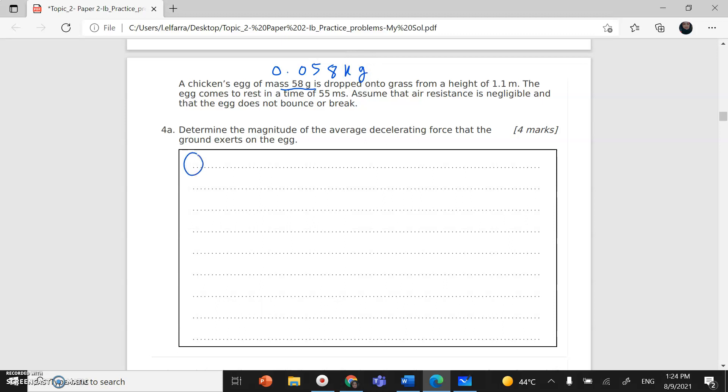The egg is dropped, so this is a free fall from a height of 1.1 meters. The egg comes to rest in time delta T, which is milliseconds. Millisecond means times 10 to the power negative 3 seconds. Assume that air resistance is negligible and the egg does not bounce or break.